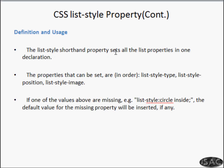The list-style shorthand property sets all list properties in one declaration. The properties that can be set are list-style-type, list-style-position, and list-style-image — in that order. You give a type like square or circle, then the position inside or outside, then the image. If one of the values is missing, the default value for that property will be inserted automatically.